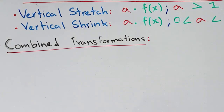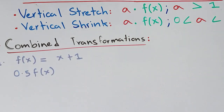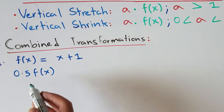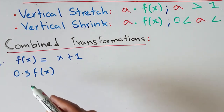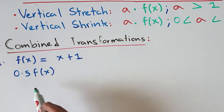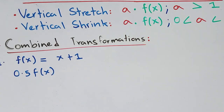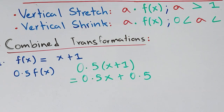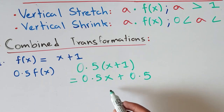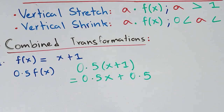Now let's look at combined transformation problems. In the first question, we have f(x) = x + 1 and we're asked to find the equation for 0.5 times f(x). Since 0.5 is between 0 and 1, this is a vertical shrink by a factor of 0.5. We multiply the whole function by 0.5: 0.5 times (x + 1) = 0.5x + 0.5. The slope changed from 1 to 0.5 and the y-intercept changed from 1 to 0.5.